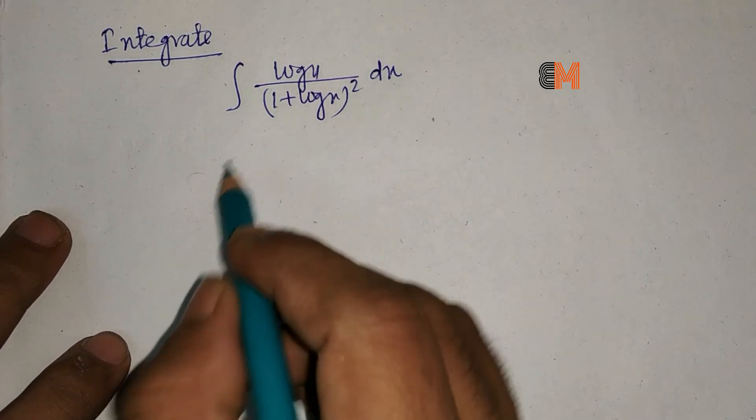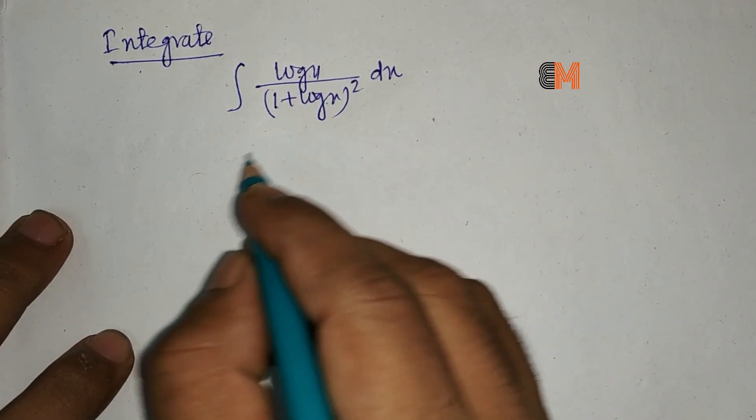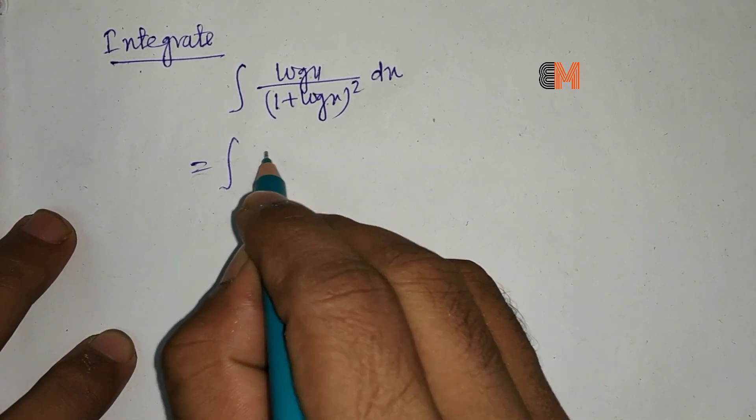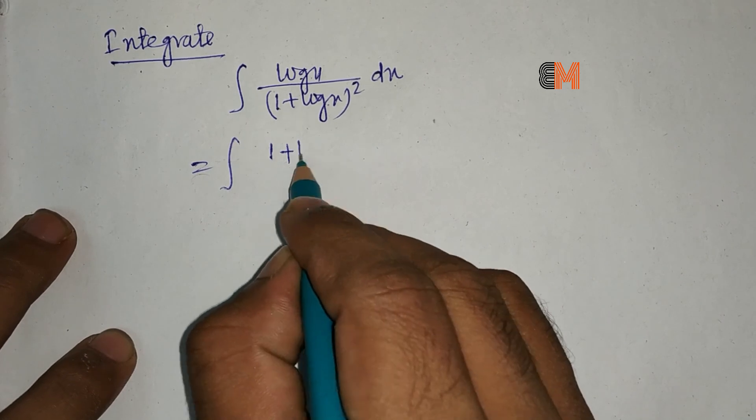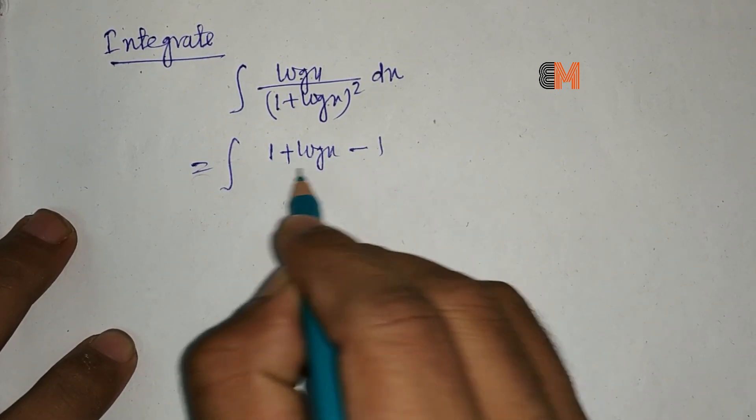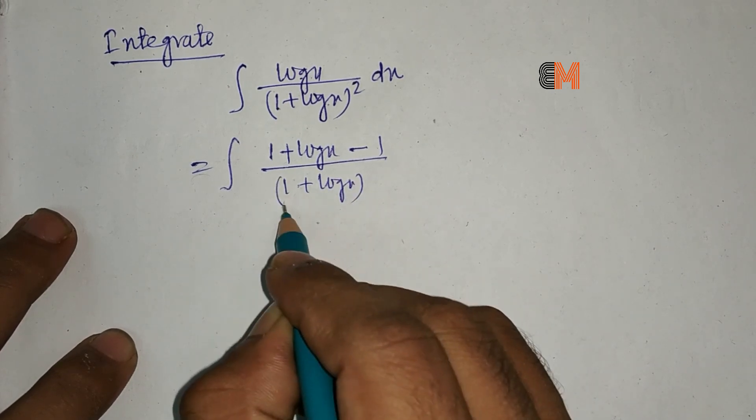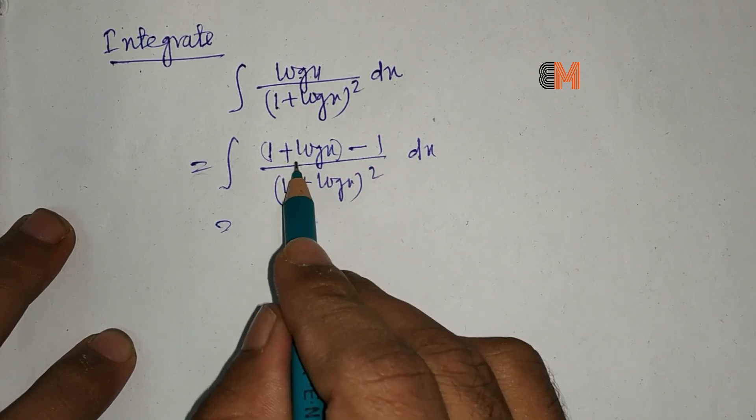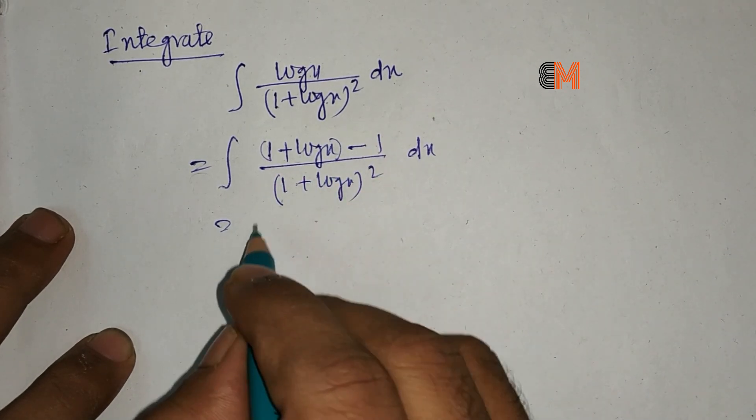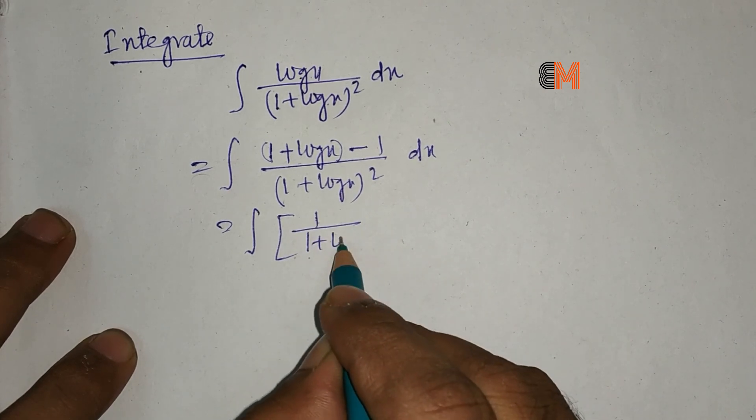Hello students, we are going to integrate log x divided by (1 + log x) whole squared. What we do here is add 1 and subtract 1. Now we split it into two parts: 1 divided by (1 + log x)